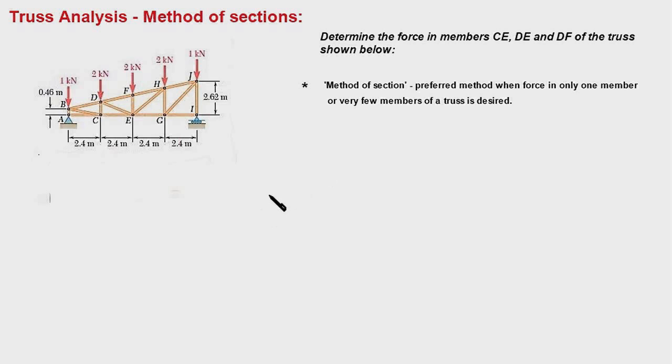We use method of sections when we want to figure out internal force in only one member or just a few members. When we want to find out internal forces in all the members, then method of joints is a preferred method. Here in this truss we want to figure out the force in members CE, DE, and DF, so we shall use method of sections.